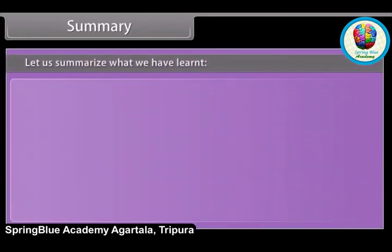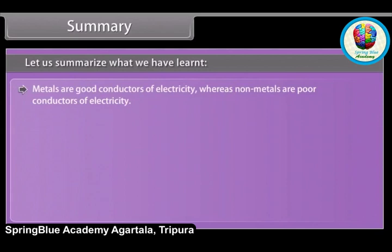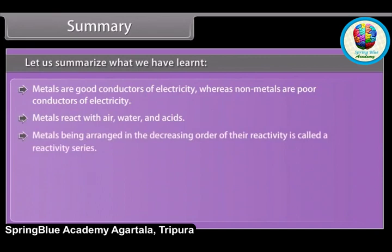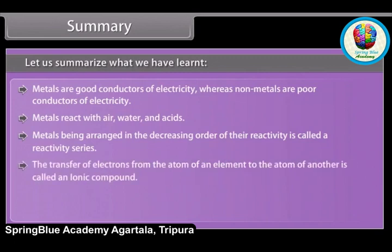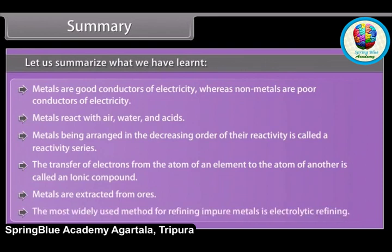Summary. Metals are good conductors of electricity, whereas non-metals are poor conductors. Metals react with air, water, and acids. Metals arranged in decreasing order of their reactivity form a reactivity series. The transfer of electrons from the atom of one element to the atom of another forms an ionic compound. Metals are extracted from ores, and the most widely used method for refining impure metals is electrolytic refining.